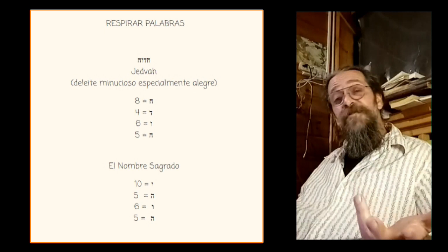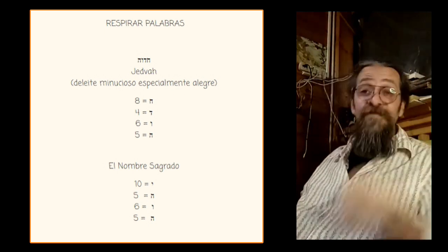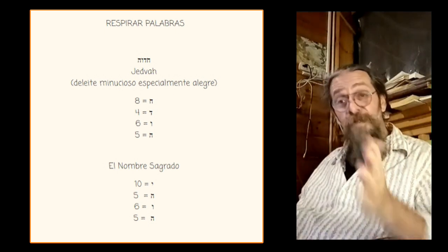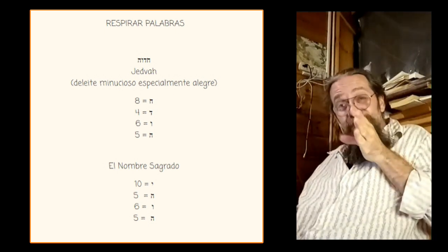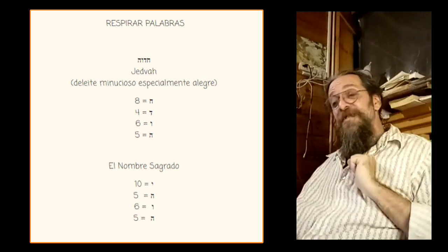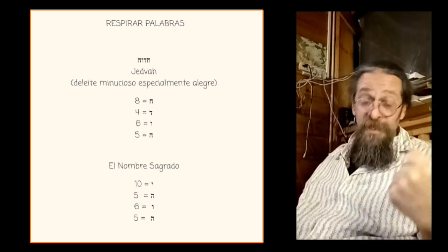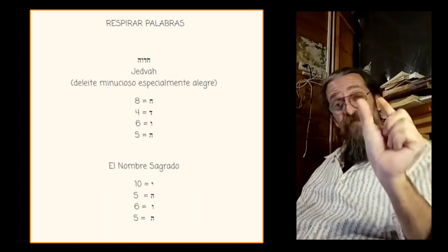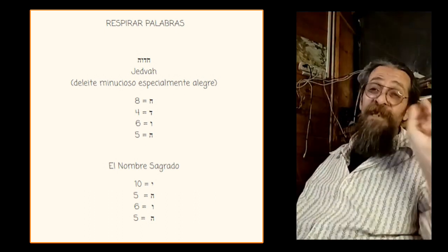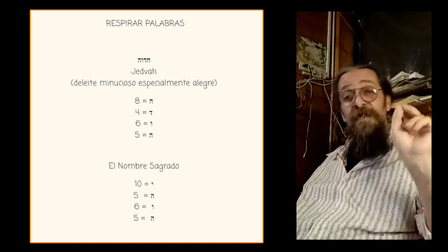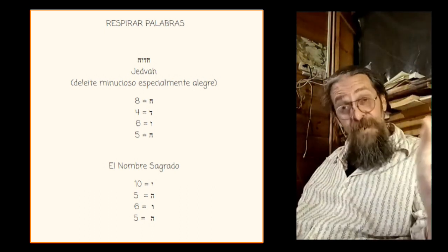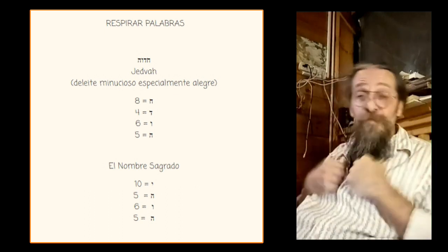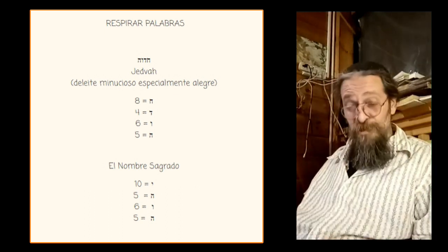Hedva también sale de la raíz Had, y Had es algo que es filoso, que es derecho a donde tiene que ir, y también es la raíz de Ejad, que es uno. Y a esa raíz de Hedva se le suman las letras Bab y Hei, que son las dos letras finales del nombre sagrado de Shem, las que tienen que ver con el mundo de las cualidades y con el mundo de la acción.